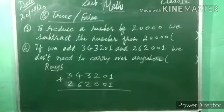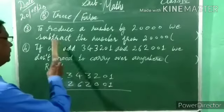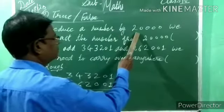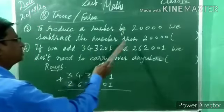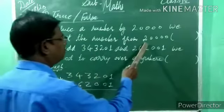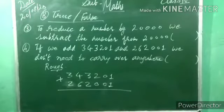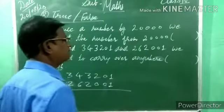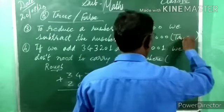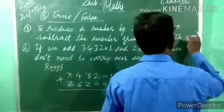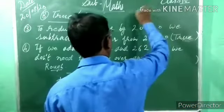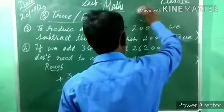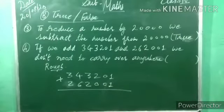Third true/false: to reduce a number by twenty thousand, we subtract the number from twenty thousand. Twenty thousand minus twenty thousand — same number subtracted from itself gives zero. We can subtract any number from itself, like five minus five equals zero. So this statement is TRUE.